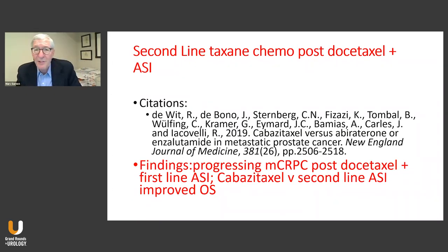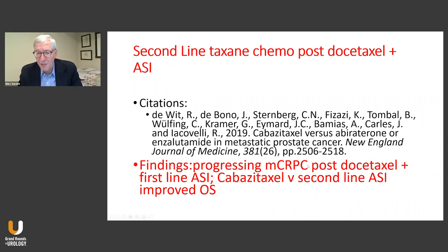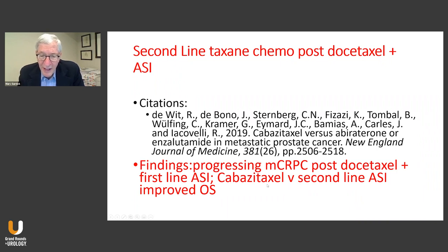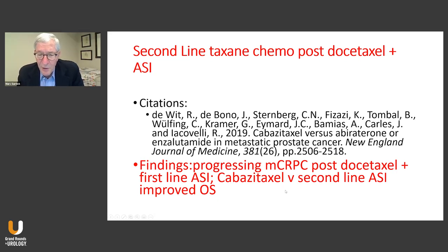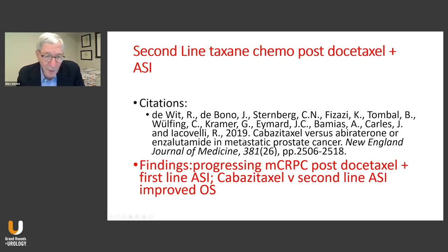What about second-line taxanes post-docetaxel and androgen signaling inhibitors? In patients with progressing metastatic castration-resistant prostate cancer after docetaxel and first-line ASIs, cabazitaxel versus second-line ASIs improved overall survival. This study is somewhat suspect in its design, mainly because patients who had the second-line ASI had relatively short responses and remissions, potentially introducing a selection bias favoring cabazitaxel. Nonetheless, this shows definite activity for cabazitaxel in those patients who have already had docetaxel as well as hormonal therapy.